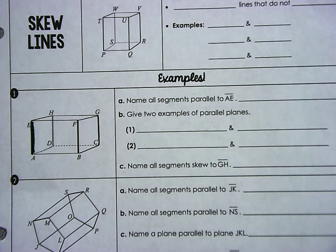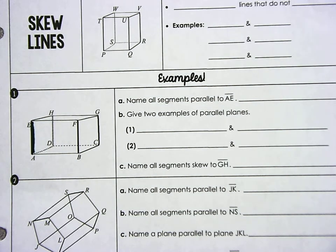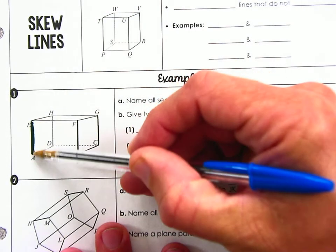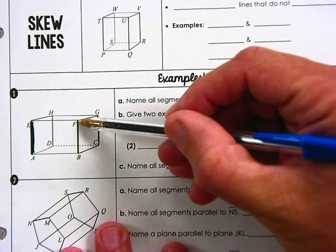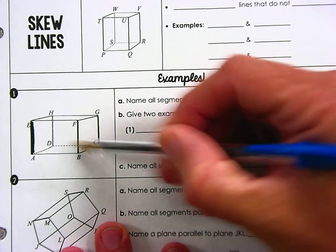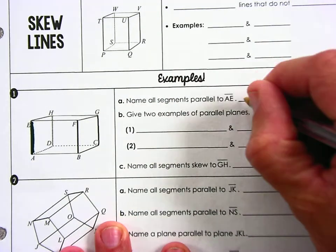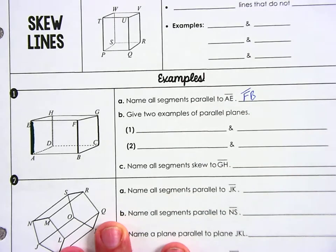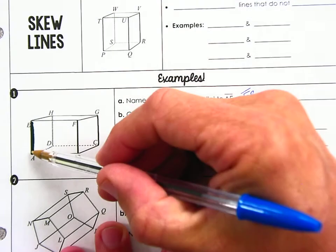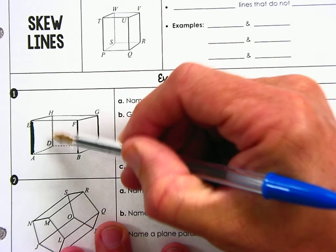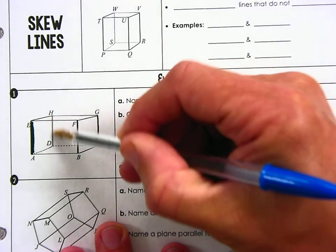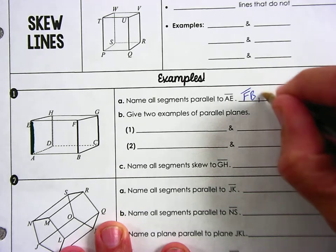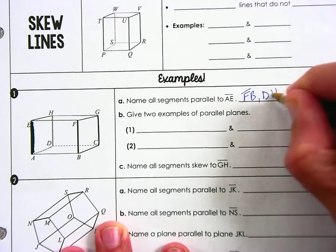All right, I want all the segments that are parallel to that. Well, remember they've got to be in the same plane. So look, here's EA and parallel over here, FB. See how they're in that front plane? So you can put FB. Everybody cool with FB? Okay, excellent. You can look at that segment EA again, and look, this one back here, DH is on that same panel not touching. So then DH is also going to be parallel.